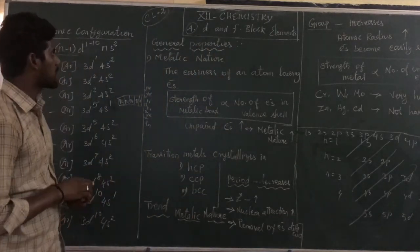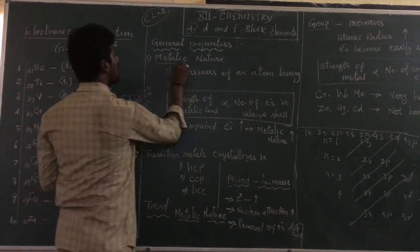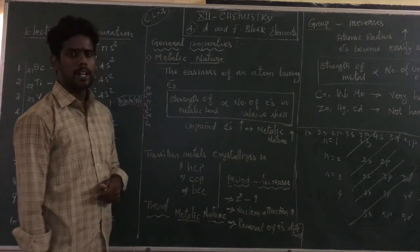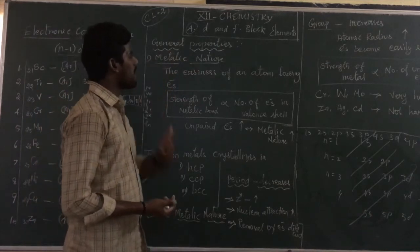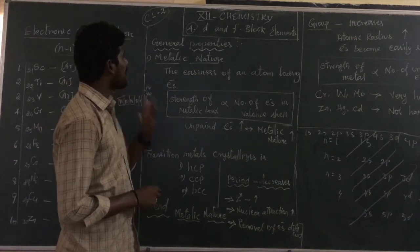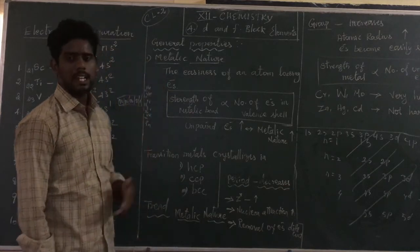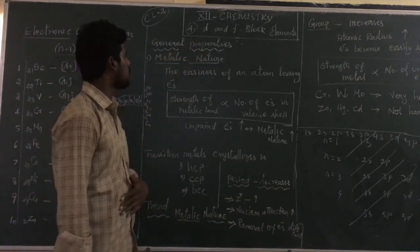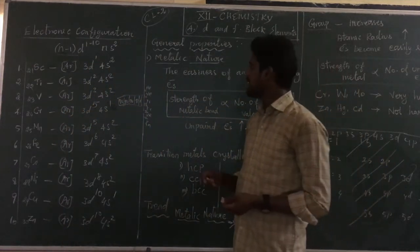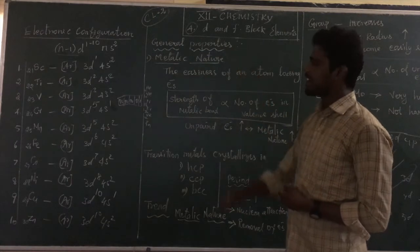The first general property of d-block elements is metallic nature, also called electro-positive character. It is defined as the easiness of an atom to lose electrons and form a cation. That means the tendency of an element to form a cation by losing an electron is known as metallic nature or electro-positive character.